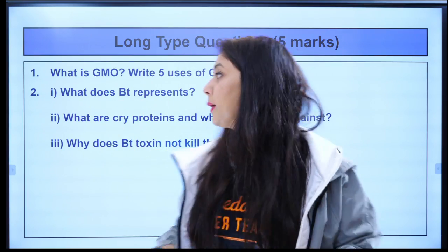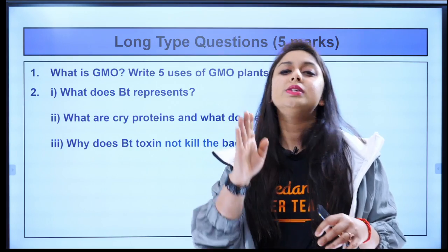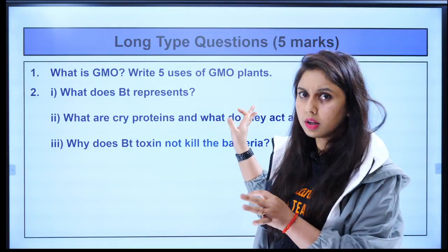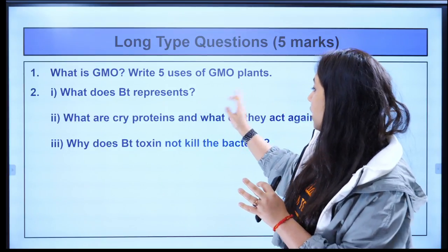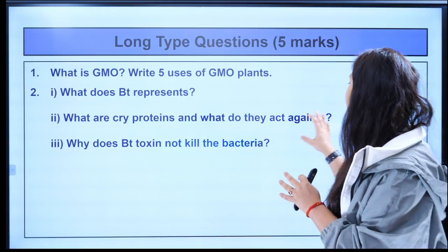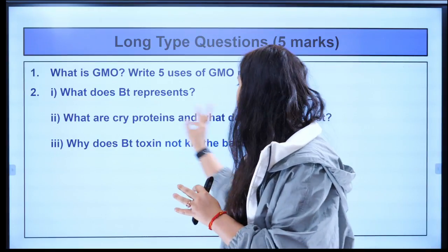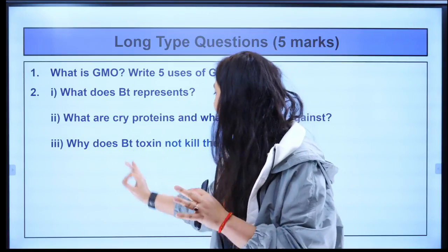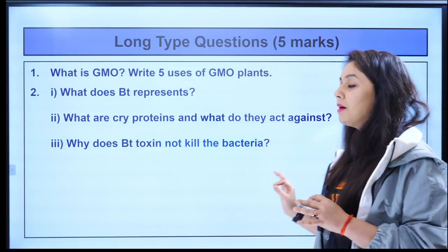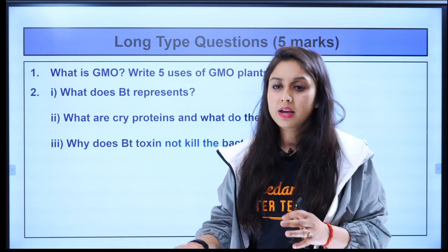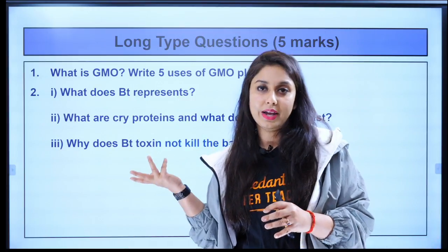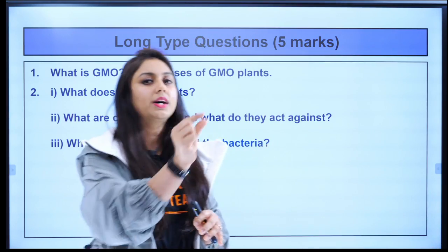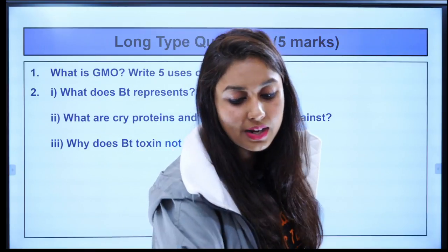If you don't remember the uses of GMO plants, go watch that video. Next: what does Bt represent in Bt cotton? Write the full form. What are cry proteins and what do they act against? That covers about three marks. One more: why does Bt toxin not kill the bacteria itself? That answer can be given in one line very easily — think about how Bacillus thuringiensis produces the Bt toxin.